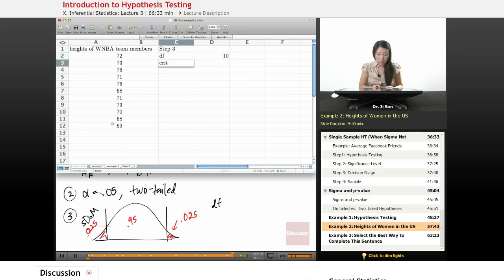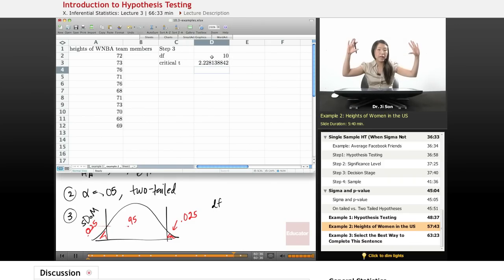And let's find the critical T. The critical T would be T inverse, right? Because we know the two-tailed probability, .05, and the degrees of freedom. And that gives us the positive critical T. So that's positive 2.23 and negative 2.23. Those are our critical boundaries. Anything outside of that, we reject the null.